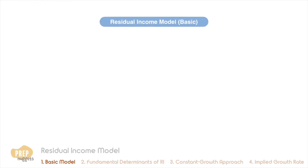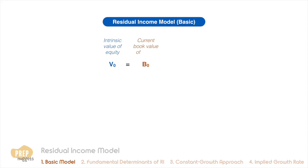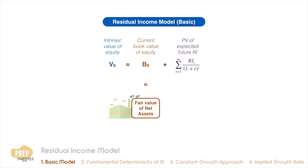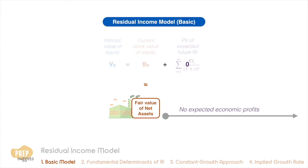The most basic residual income valuation model breaks the intrinsic value of a stock into two elements: the current book value of equity and the present value of expected future residual income. The premise is simple — in an idealized world, the book value of equity represents the fair value of its net assets. If the firm is not forecasted to earn economic profit, the intrinsic value of equity should simply be its book value.